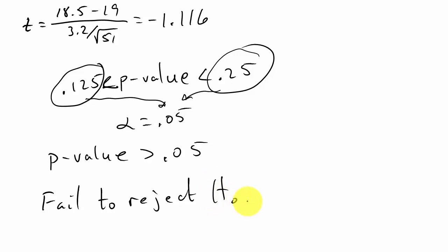What does this mean? Well, at the 5% level of significance, the sample data of the 51 fish do not indicate that the average trout length is less than 19 inches.